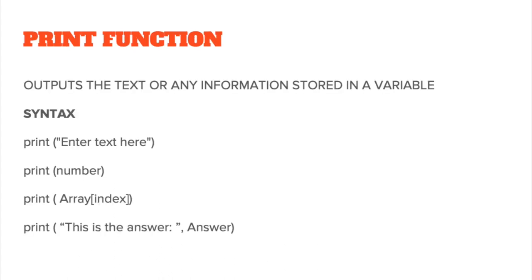So let's start by looking at the print function, which is the basic function to output something on screen. This will output any text or any information stored in a variable. The syntax is simply print, lowercase, with brackets. If you want to output a string, put it in quote marks and remember to close the bracket. You can print any variable — print number will output whatever the number variable stores. You can print an array value using array square bracket index. And finally, you can combine strings and variables: print 'This is the answer', comma, the answer variable — joining both together.